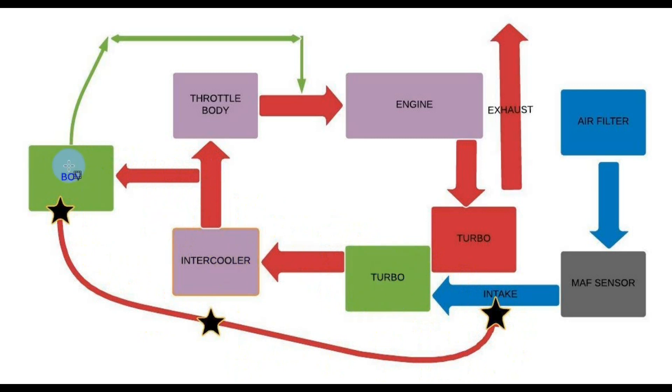So with a BOV, atmospheric blow-off valve, you're just going to be venting to the atmosphere and the air going into the turbo is going to be ambient temperature because it's going to be coming from the outside. So this is the main reason why in theory, an atmospheric blow-off valve is superior to a recirculating blow-off valve.